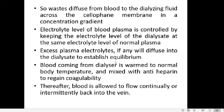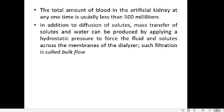After dialysis, the blood coming out of the dialyzer is warmed to normal body temperature before being returned to the body. Since heparin was added earlier, the blood has lost its clotting ability. To regain coagulability before returning it to the body, the blood is mixed with anti-heparin. The blood is then allowed to flow back into the patient's vein, and the total amount of blood in the artificial kidney at one time is usually less than 500 milliliters.